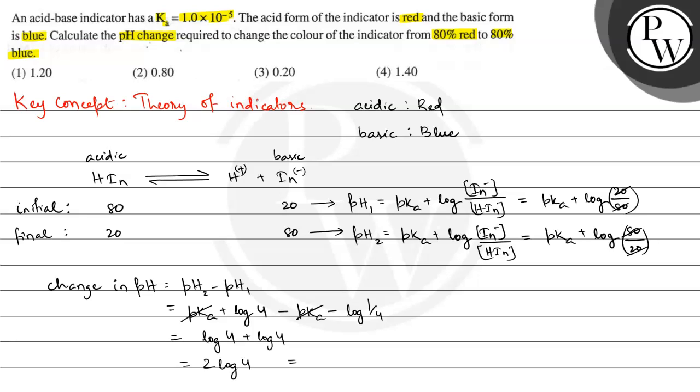Log 4 value is 0.602, so 2 multiplied by 0.602 is equal to 1.204. This is the pH change that is required. So the correct answer is given in option number 1, that is 1.20. We hope you understood the concept well, best of luck.